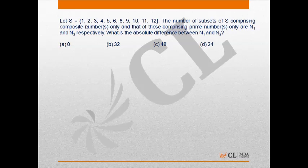So first of all, identify prime and composite numbers in the given set. We know that 1 is neither prime nor composite, 2 is a prime number, 3 is a prime number, same is the case with 5 and 11. So there are 4 numbers in the set that are prime numbers.